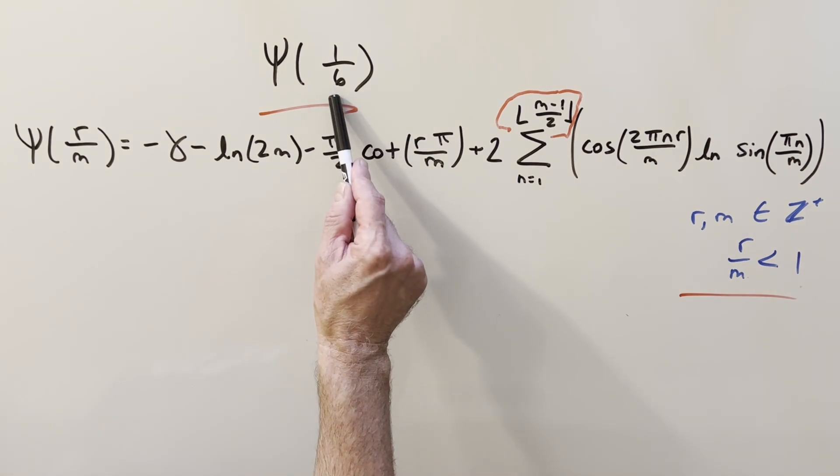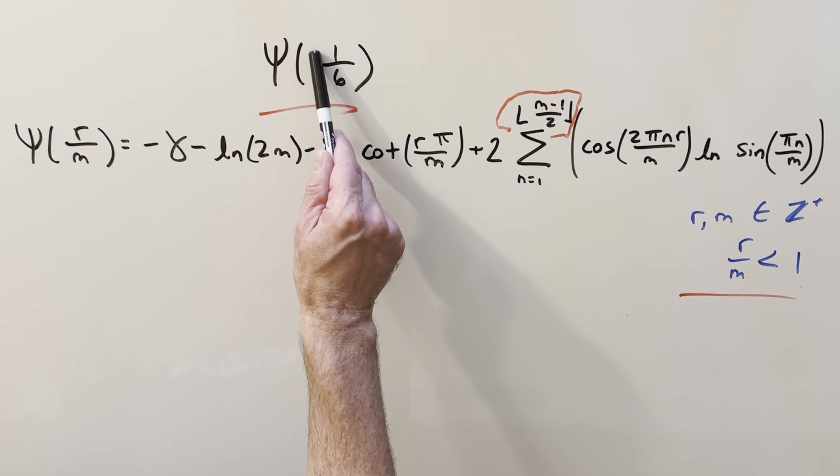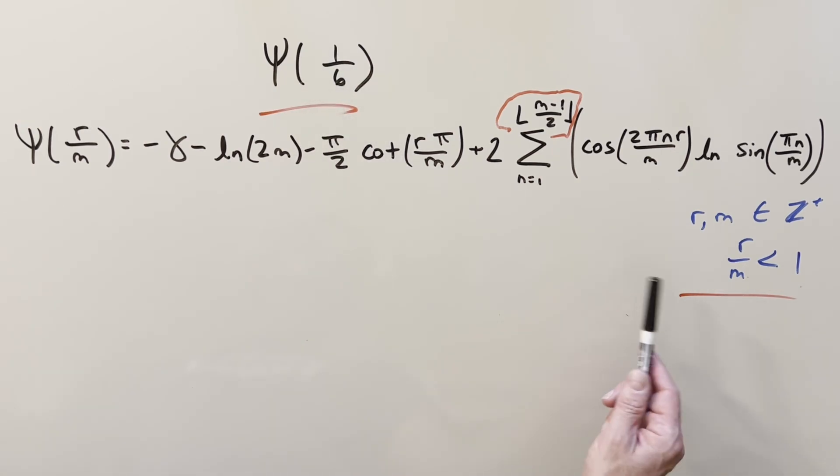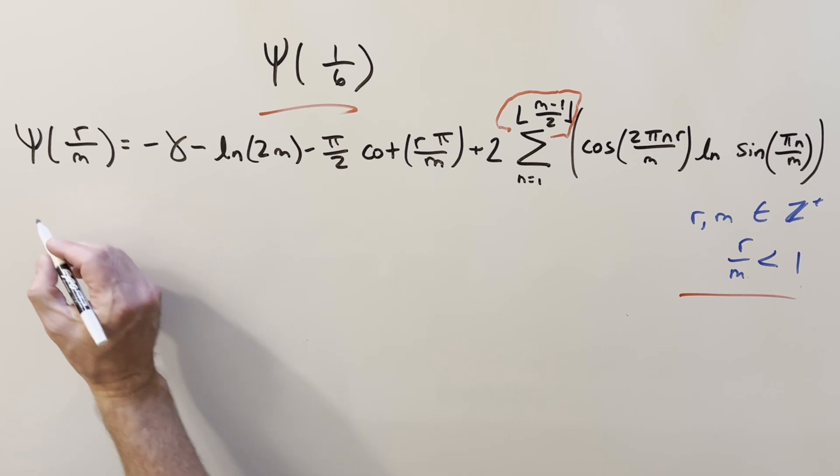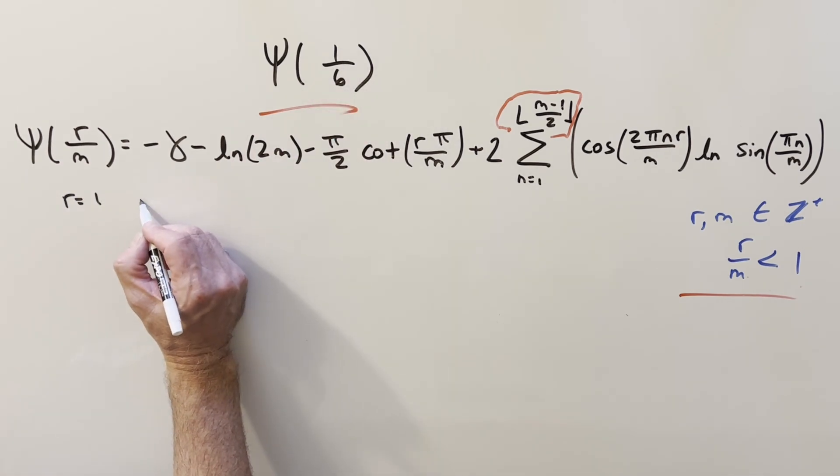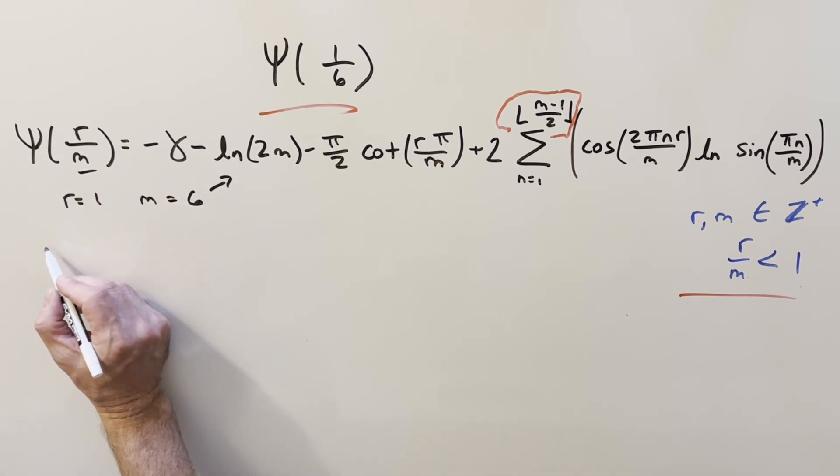So to put this to use on our problem, what we have here already meets these criteria. We have it already reduced. We have an integer in the numerator and denominator. And 1 sixth is going to be less than 1 or between 0 and 1. So our r value is going to be the numerator equal to 1. And the m value in this is just going to be 6.